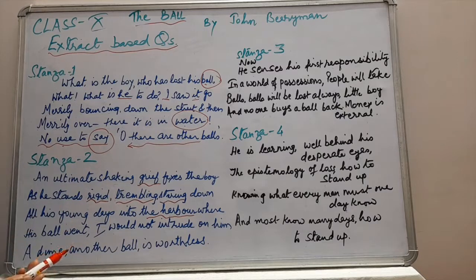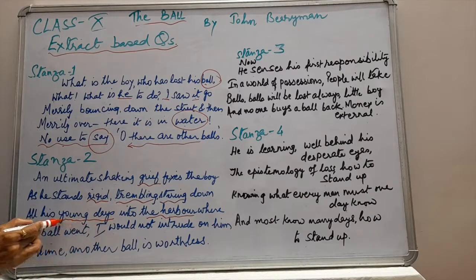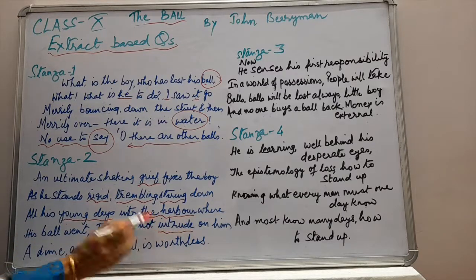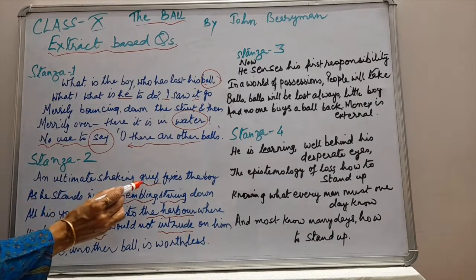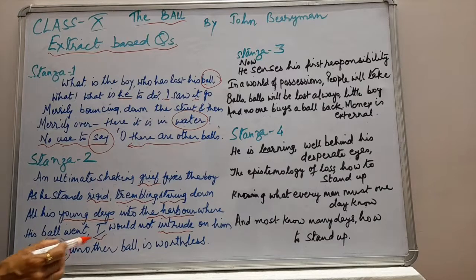What else has gone along with the ball? His young days — meaning his childhood memories have gone along with the ball into the harbour. The poet would not like to intrude, meaning interfere, because no amount of sympathy is going to reduce his grief. 'Dime' is a currency, a small amount, with which a ball can be bought.